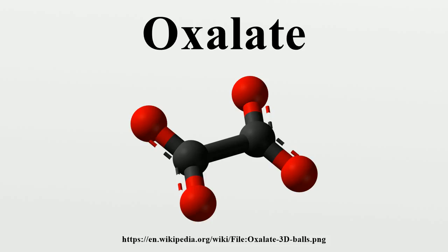Occurrence in nature: Oxalate occurs in many plants, where it is synthesized by the incomplete oxidation of carbohydrates. Oxalate-rich plants include fat hen, sorrel, and several Oxalis species. The roots and leaves of rhubarb and buckwheat are high in oxalic acid. Other edible plants that contain significant concentrations of oxalate include, in decreasing order: